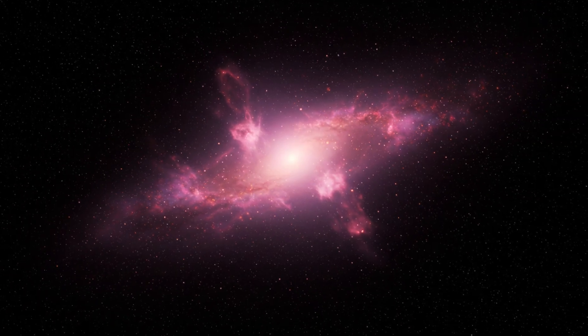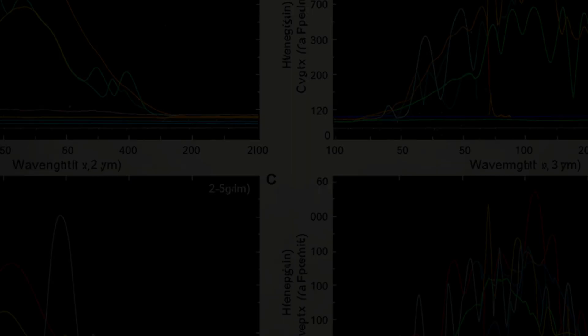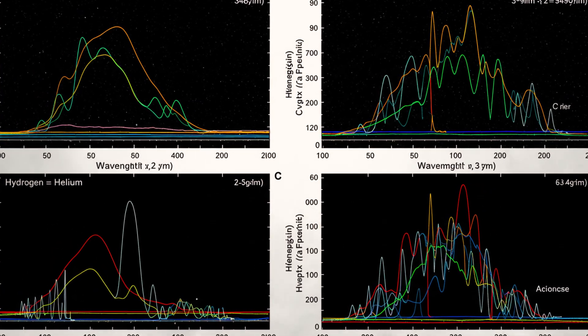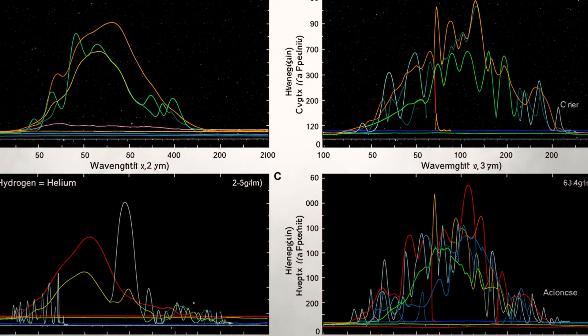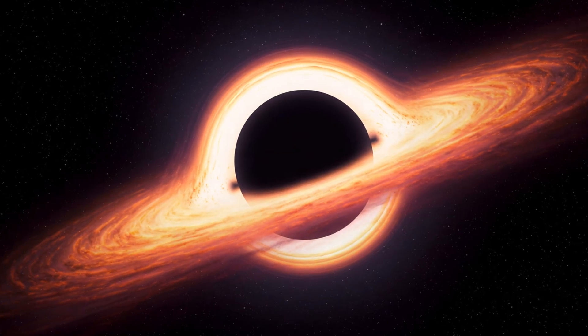Even stranger, the galaxy around it contained mostly hydrogen and helium, the raw ingredients of the early cosmos, and very few heavy elements. That means it hadn't been enriched by multiple generations of stars. So where did this black hole come from?